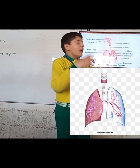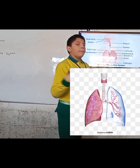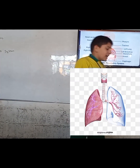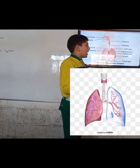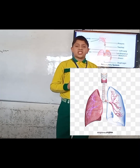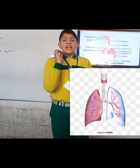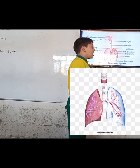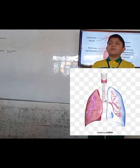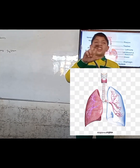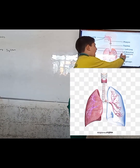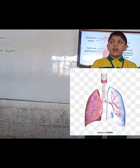As the two bronchi enter the two lungs, they further divide into many smaller bronchioles. At the end of these bronchioles, there are small sac-like structures shaped like grapes, which are known as alveoli. Just as the main filtration in the excretory system happens with the help of nephrons, similarly, alveoli oxygenate our blood.